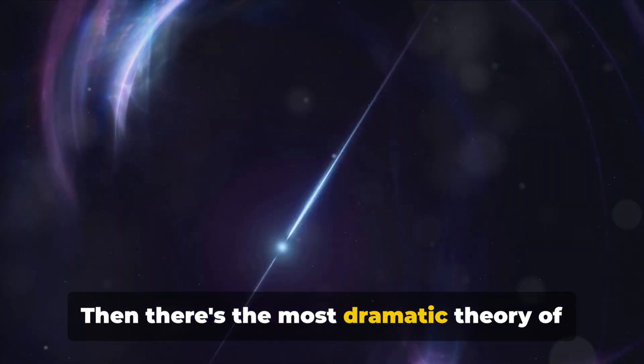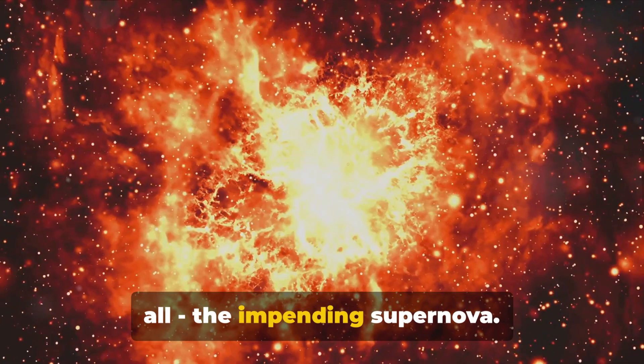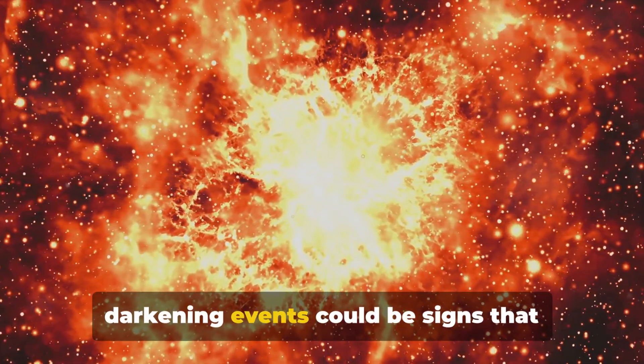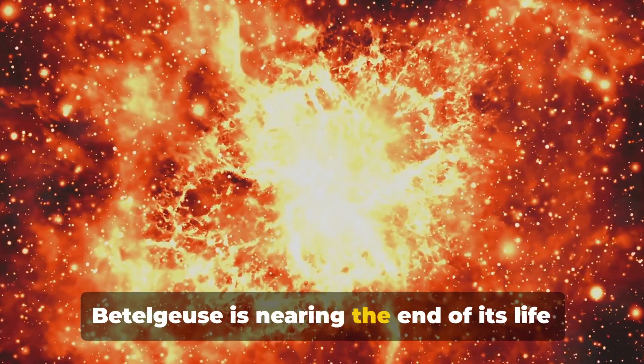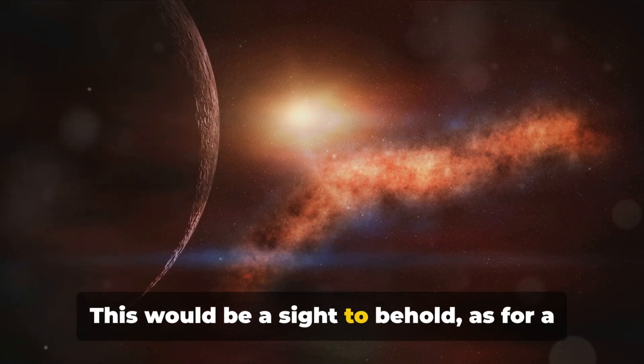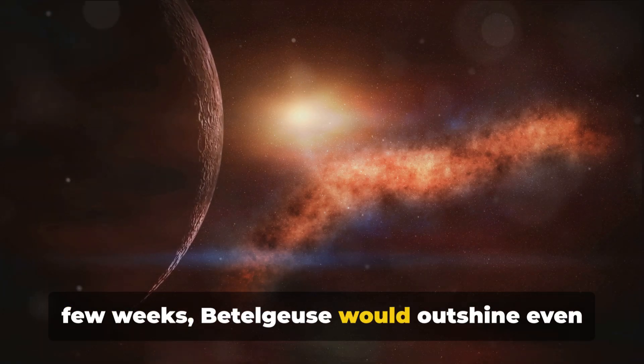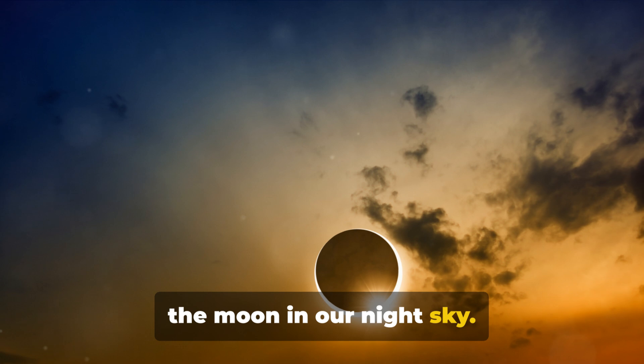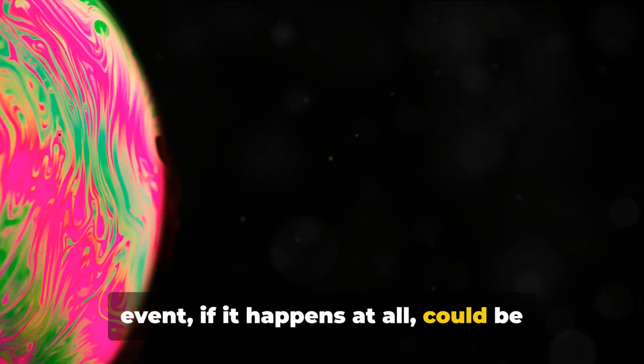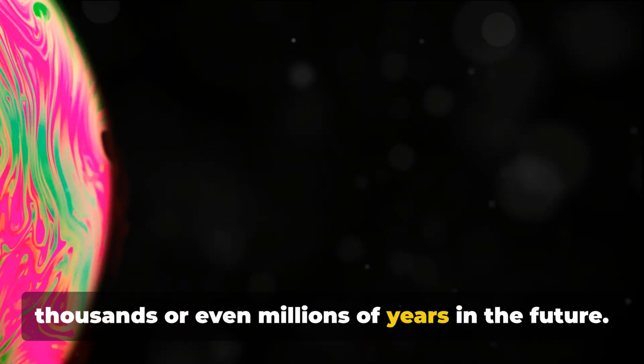Then there's the most dramatic theory of all, the impending supernova. Some scientists speculate that these darkening events could be signs that Betelgeuse is nearing the end of its life and could explode in a supernova. This would be a sight to behold, as for a few weeks Betelgeuse would outshine even the moon in our night sky. But before you get too excited, this event, if it happens at all, could be thousands or even millions of years in the future.